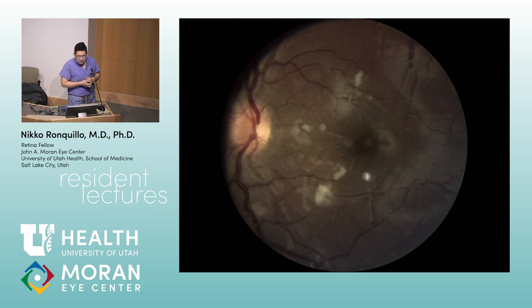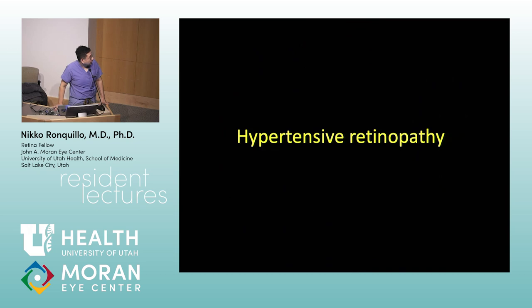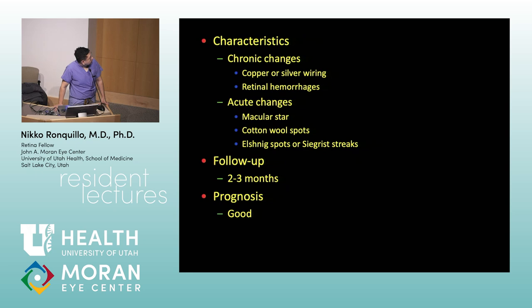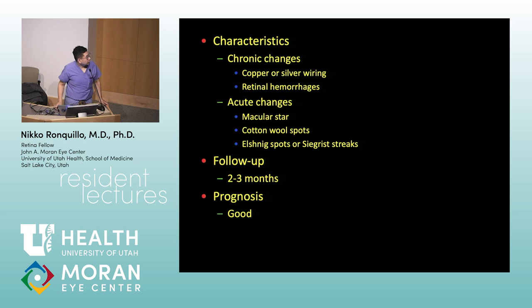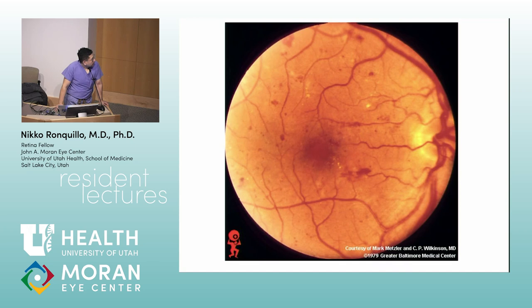Next image — lots of cotton wool spots, not much hemorrhage. Differential includes HIV, but this is hypertensive retinopathy. When you see more cotton wool spots than blood, think hypertensive retinopathy. Check blood pressure. You can have copper or silver wiring. Macular star: the exudate follows Henle's fiber layer, giving a petaloid configuration. Other findings include Elschnig spots and Siegrist streaks in the periphery.